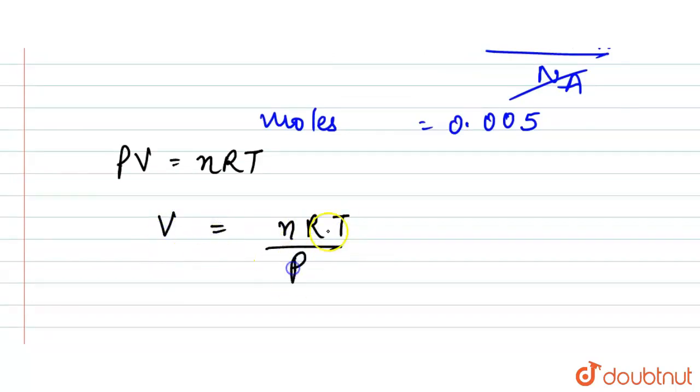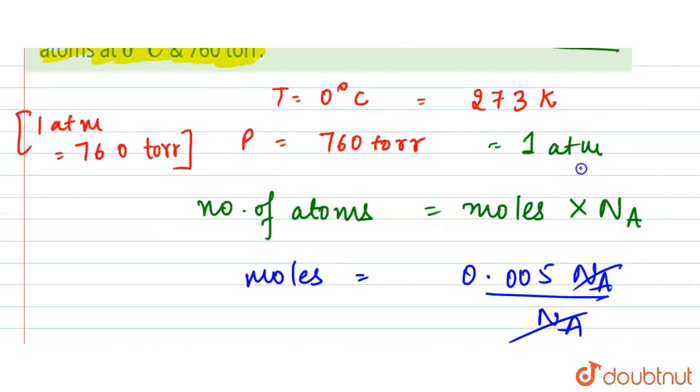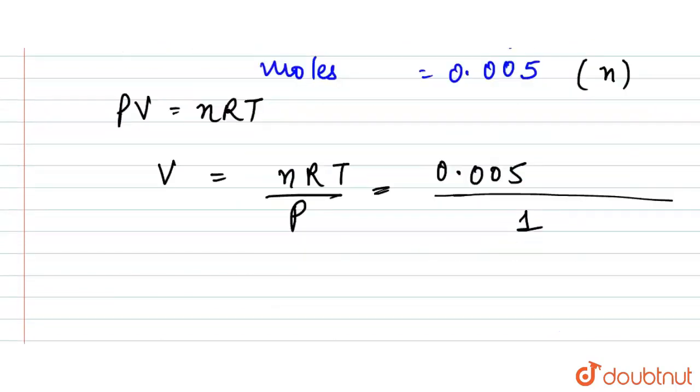This is our n value, n is 0.005. Upon what we will have? One, because here we find out that the pressure is one atmosphere. Temperature is 273 Kelvin. Before that we have R, R is our constant that is 0.082 liter atmosphere per Kelvin per mole.